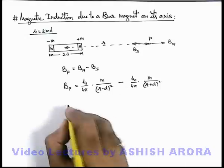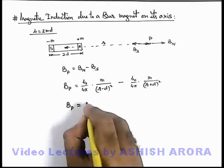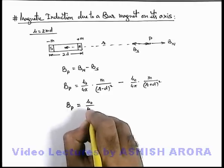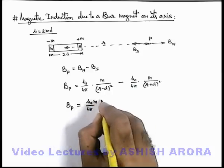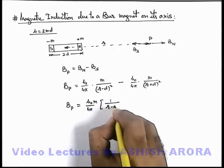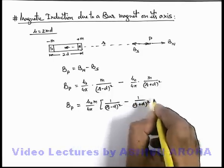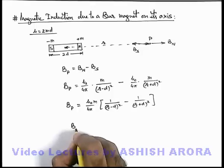If we take the terms common and take the LCM, the magnetic induction will be mu_0 over 4π times m, and inside we are having 1 over (r-d)² minus 1 over (r+d)².